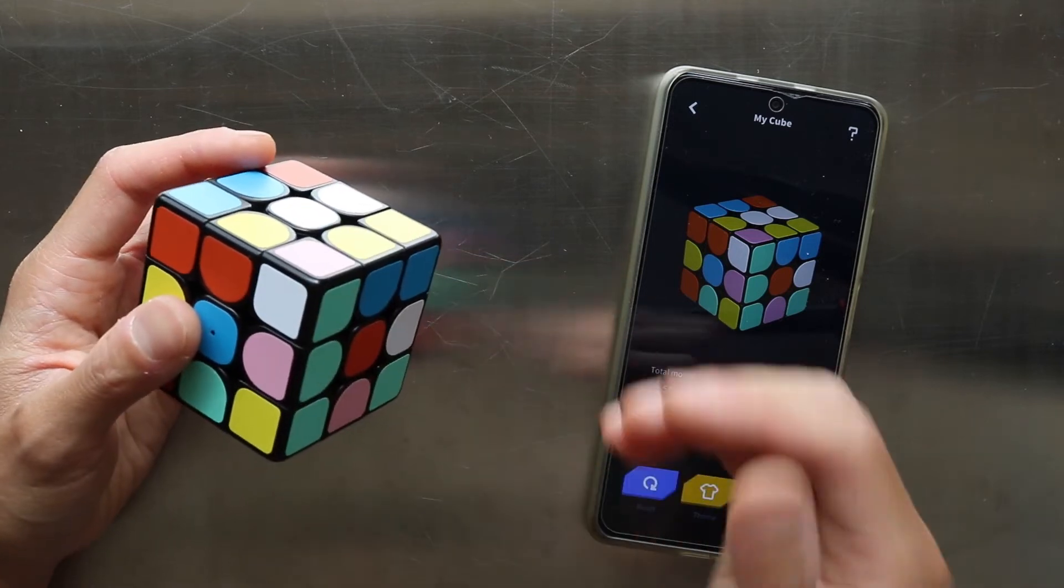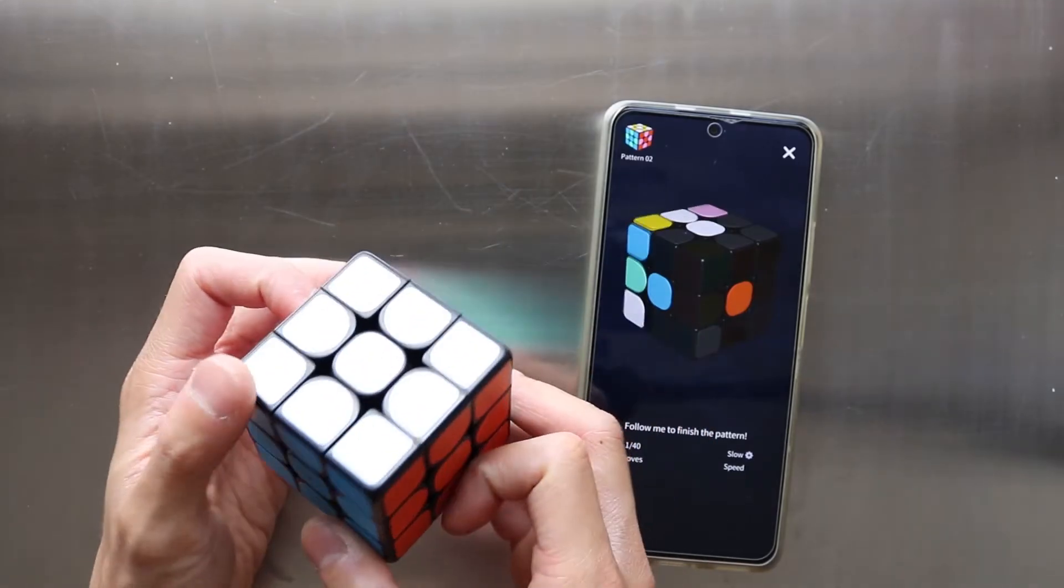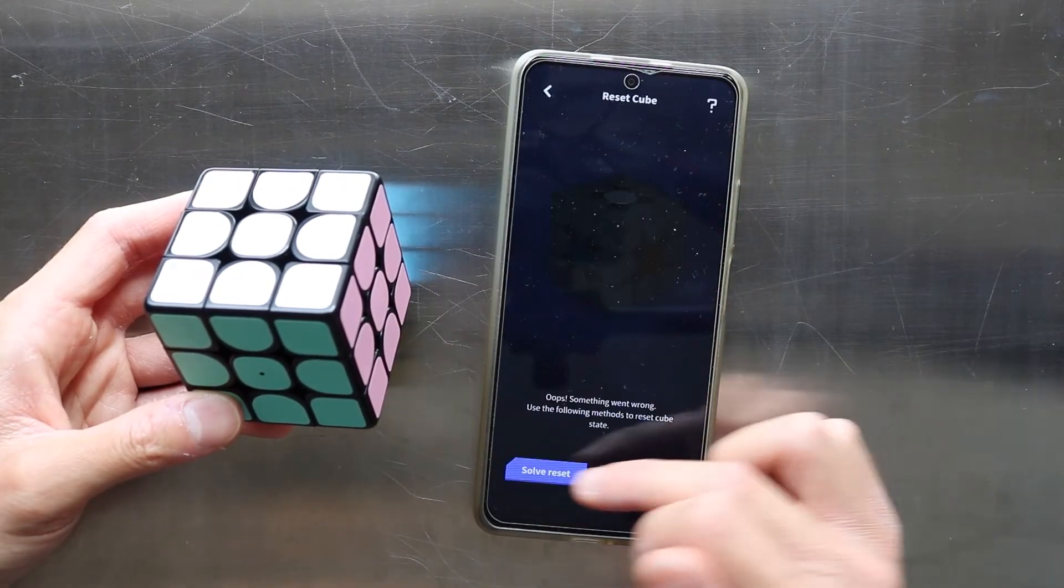for example, when it is unable to track rotations because it has run out of battery, then you will get an out of sync cube like I do. Luckily, there's a reset button in the app to fix this.